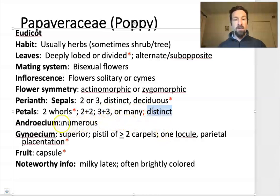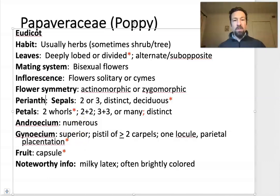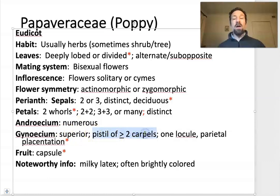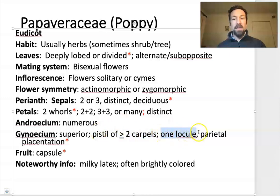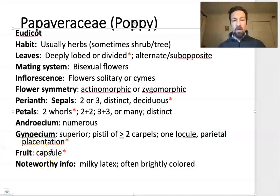The petals are distinct, so there's no fusion between them. The androecium — the stamens — are numerous, and that's a characteristic of the order applying to the family as well. The gynoecium, like members of this order generally, is superior. There are two carpels that are fused together forming the pistil. Those two carpels, in fusing together, have one locule inside and the placentation is parietal. The fruit is a capsule, which will be a helpful trait for identifying this family.